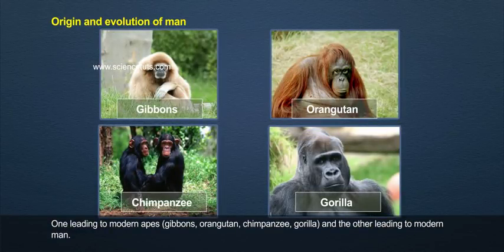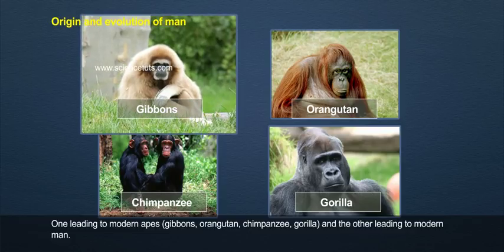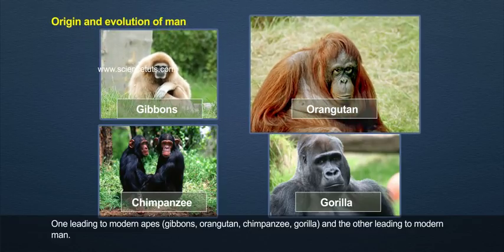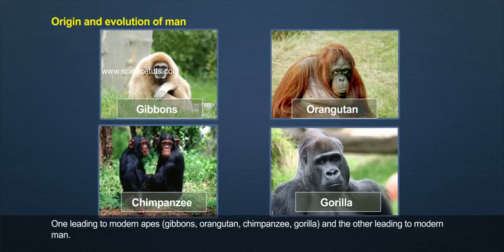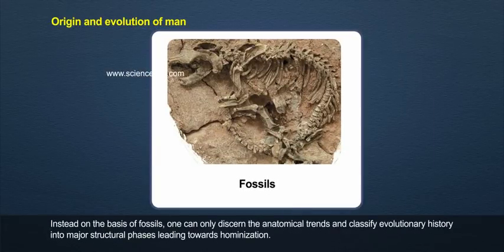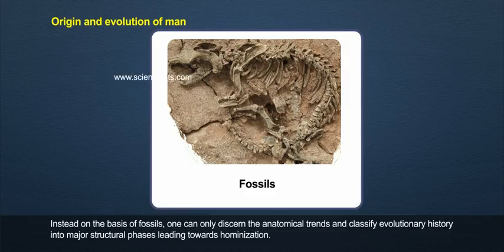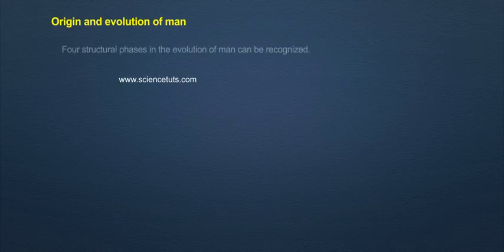One direction led to modern apes — gibbons, orangutan, chimpanzee, gorilla — and the other leading to modern man. On the basis of fossils, one can only discern the anatomical trends and classify evolutionary history into major structural phases leading towards humanization. Four structural phases in the evolution of man can be recognized.